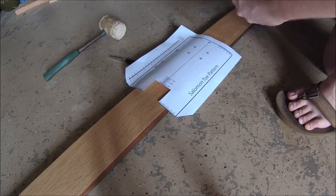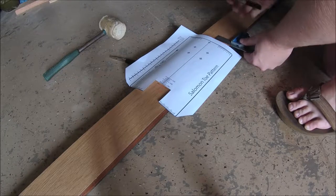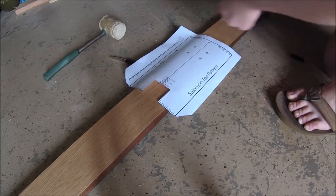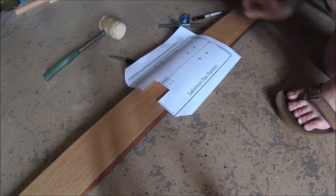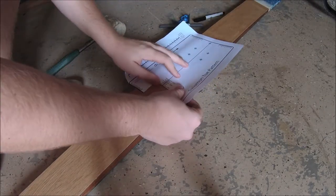So I first start off by finding the center line. I'm using a square that has an adjustable fence, and essentially I'm just splitting the difference after I put it on the side.